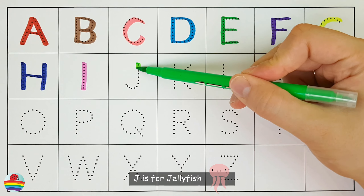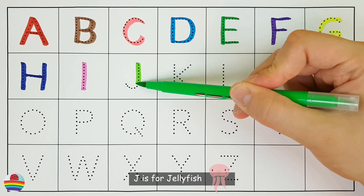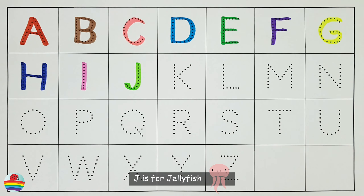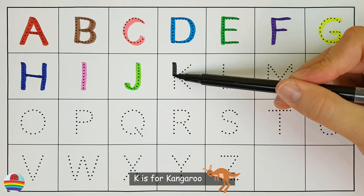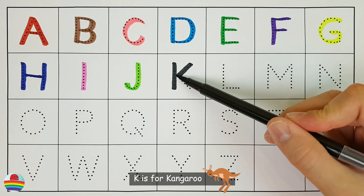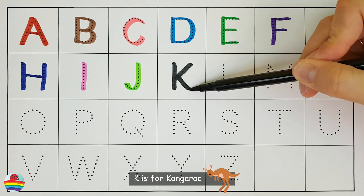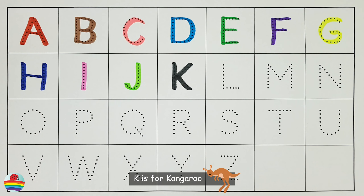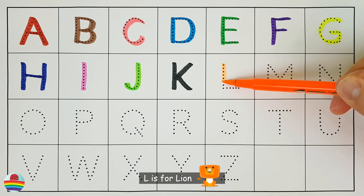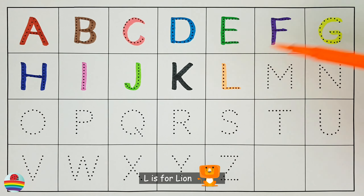J. J is for jellyfish. J. K. K is for kangaroo. K. L. L is for lion. L.